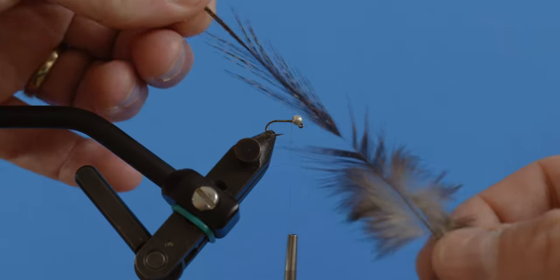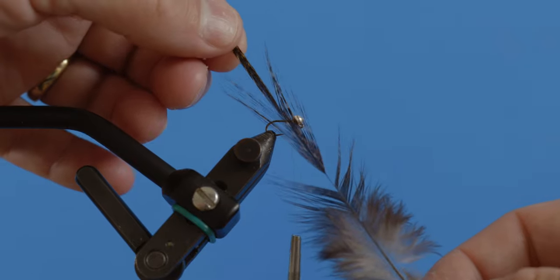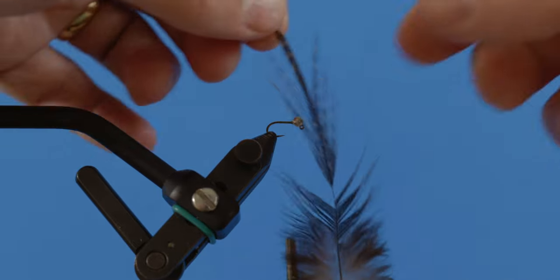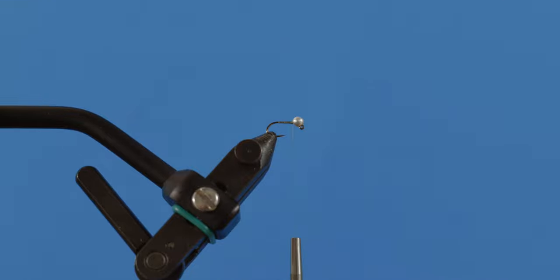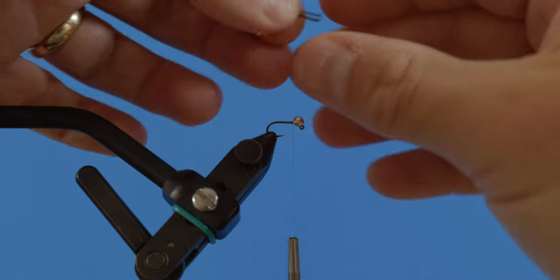So I've got a tailing fiber here. This is a Whiting CDL feather, and I'm just going to take about eight fibers from that. Pull those off.